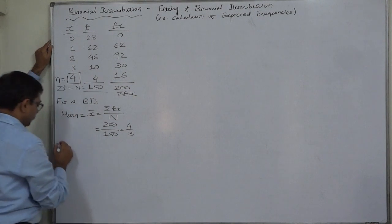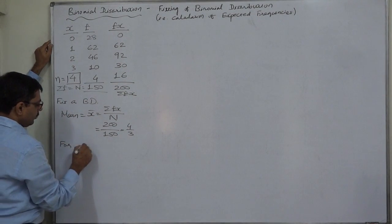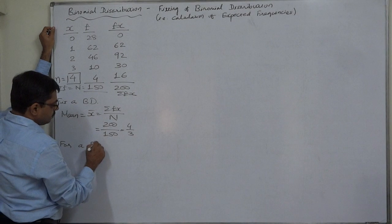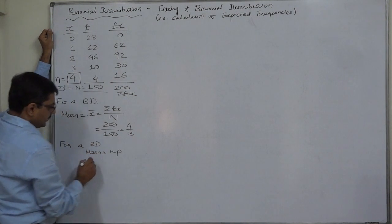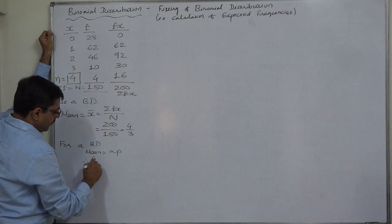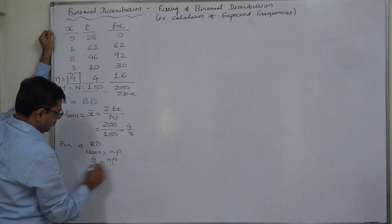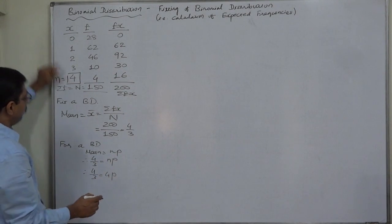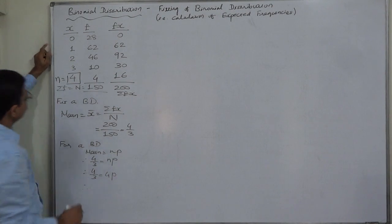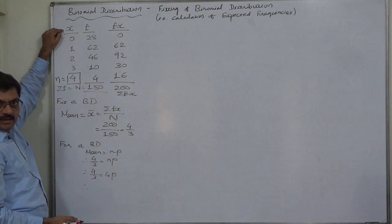So it comes to 4 by 3. Now we know that for a binomial distribution mean equals to np. Therefore, 4 by 3 equals to 4p, because n is 4, the highest possible value of the random variable, which is always equivalent to small n for the binomial distribution.